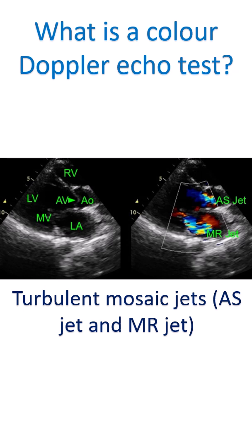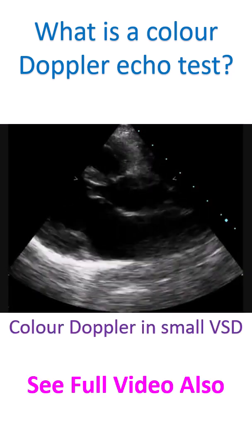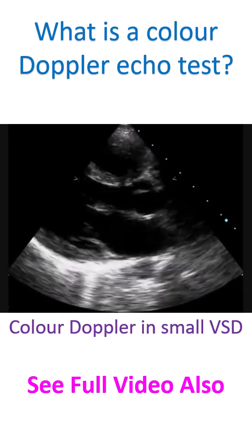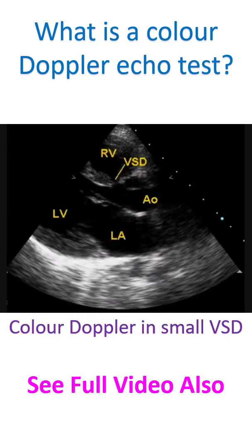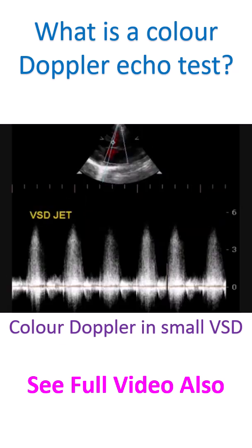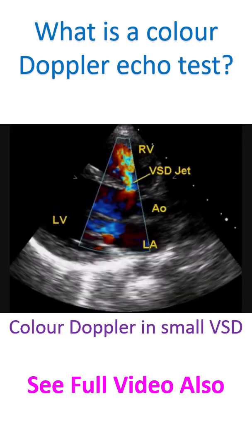All high-velocity flows across the diseased walls will be shown as mosaic jets. Color Doppler is very useful in giving a quick visual assessment of leaks and obstructions across walls. It will also show abnormal flows as in a defect between the walls of the chambers.